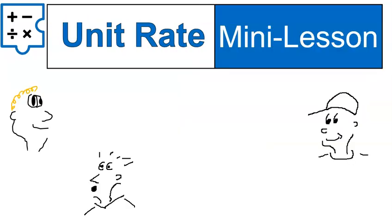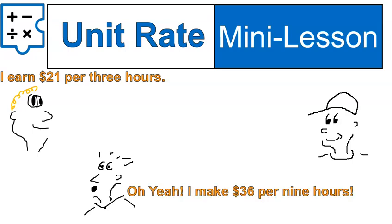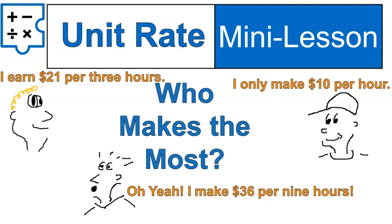First off, this is a situation where unit rate might be seen. If this guy is saying, I earn $21 per three hours, and this guy is bragging, oh yeah, I make $36 per nine hours, and this guy goes, well, I only make $10 an hour. The question is, who makes the most amount of money?